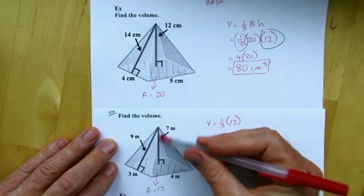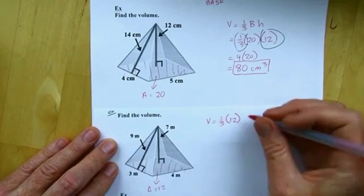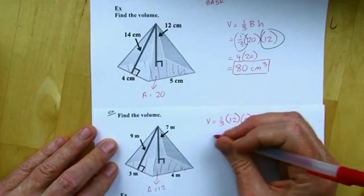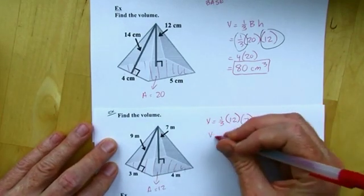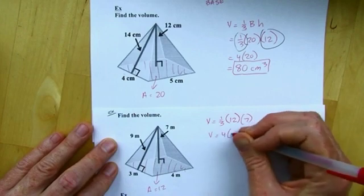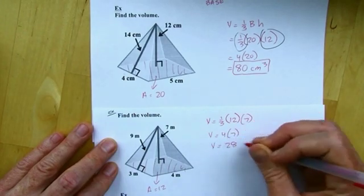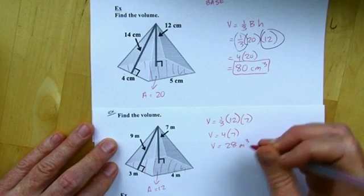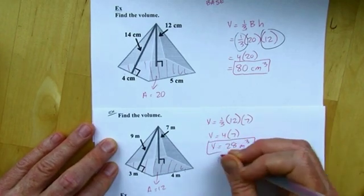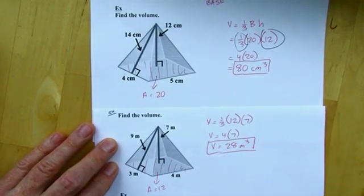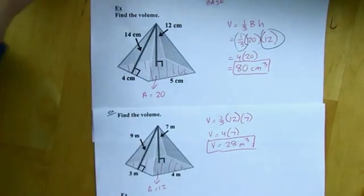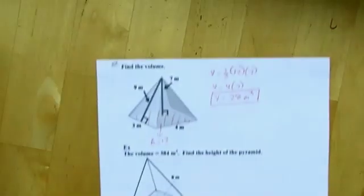And the area of the base here is going to be 12. And then the height, I've got to make sure I use 7, not 9. A third of 12 is 4. So, my volume is going to be 28 cubic meters.